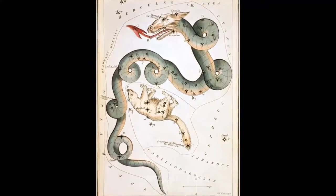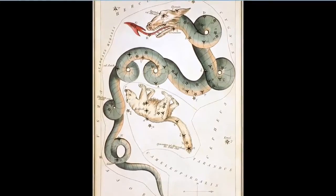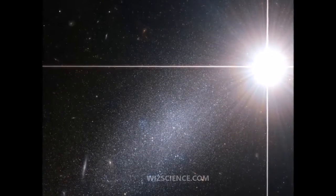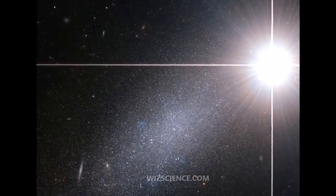Draco is a constellation in the far northern sky. Its name is Latin for dragon. Draco is circumpolar for many observers in the northern hemisphere.